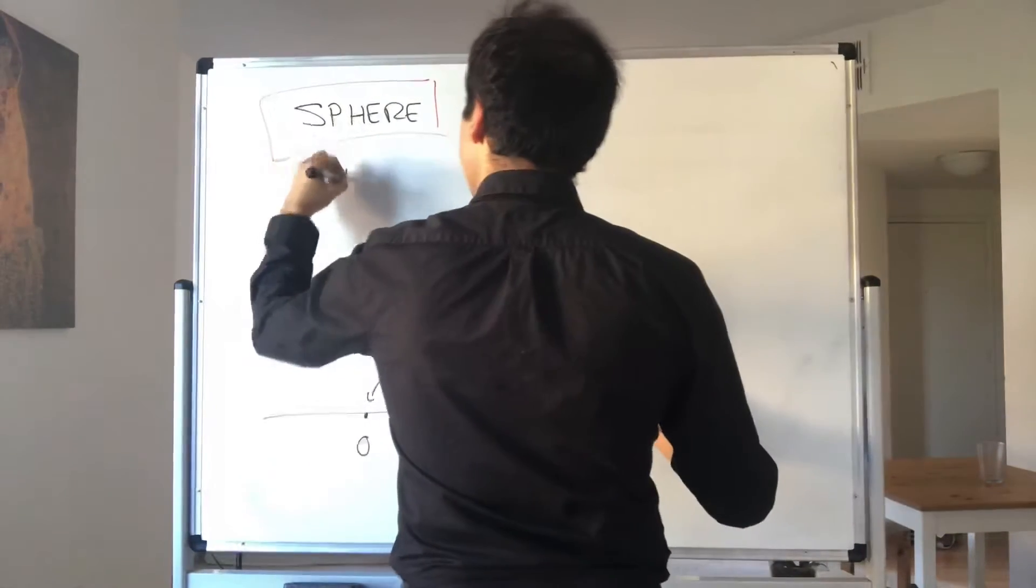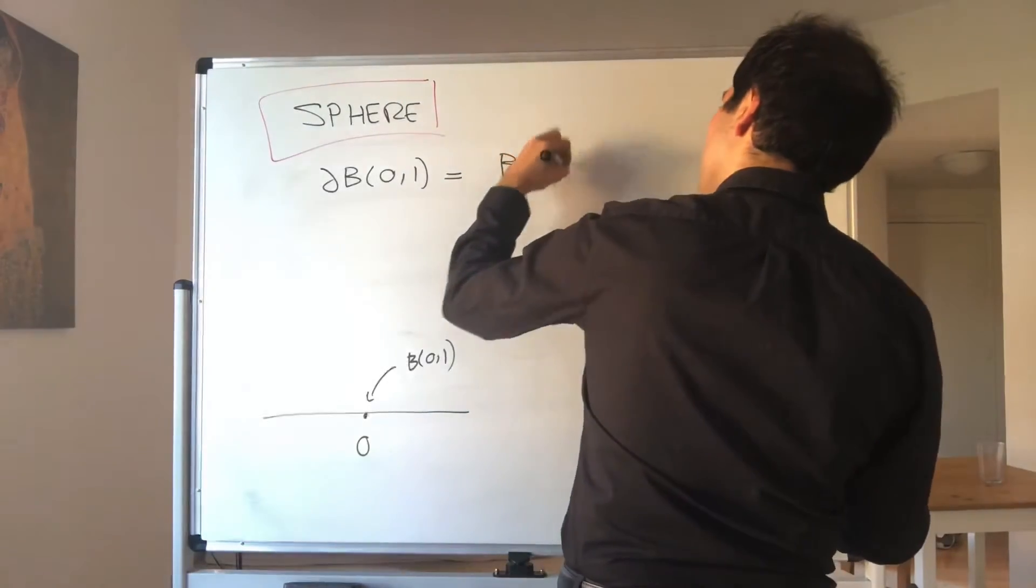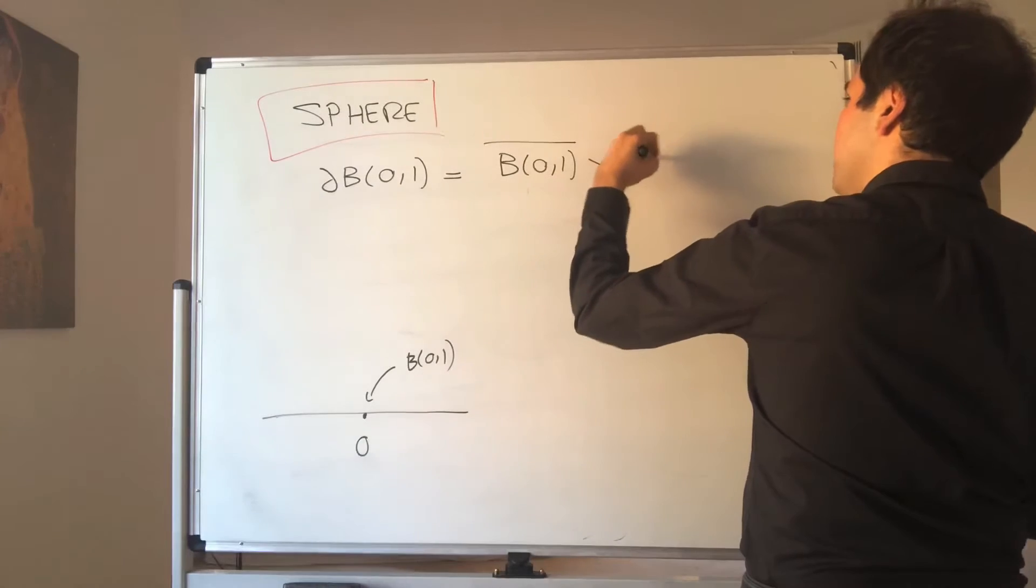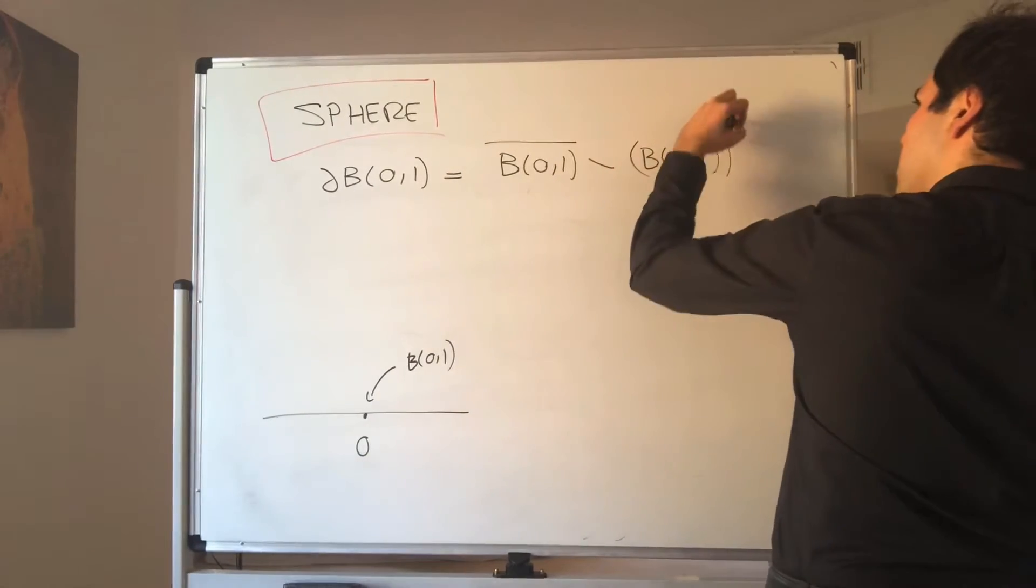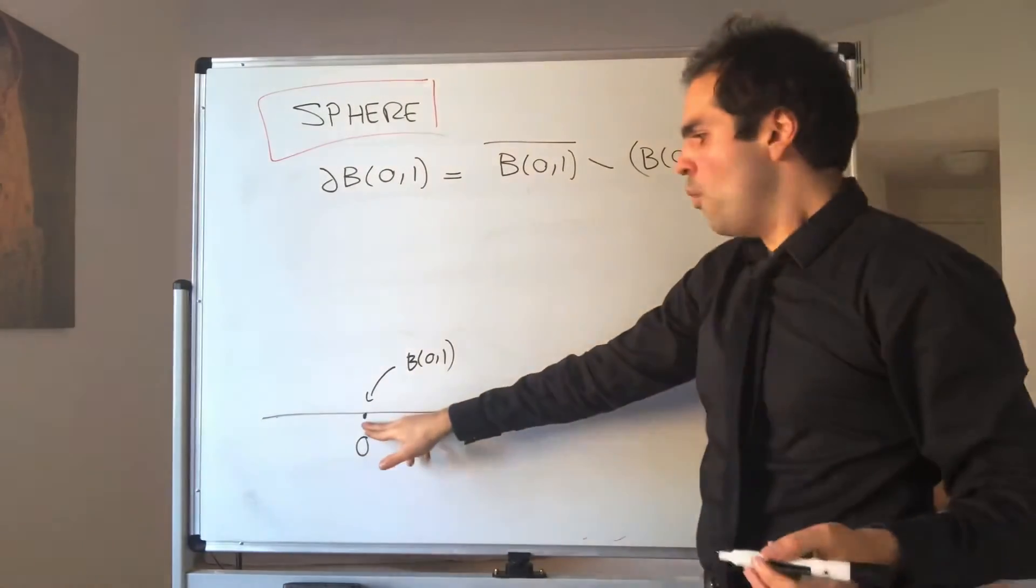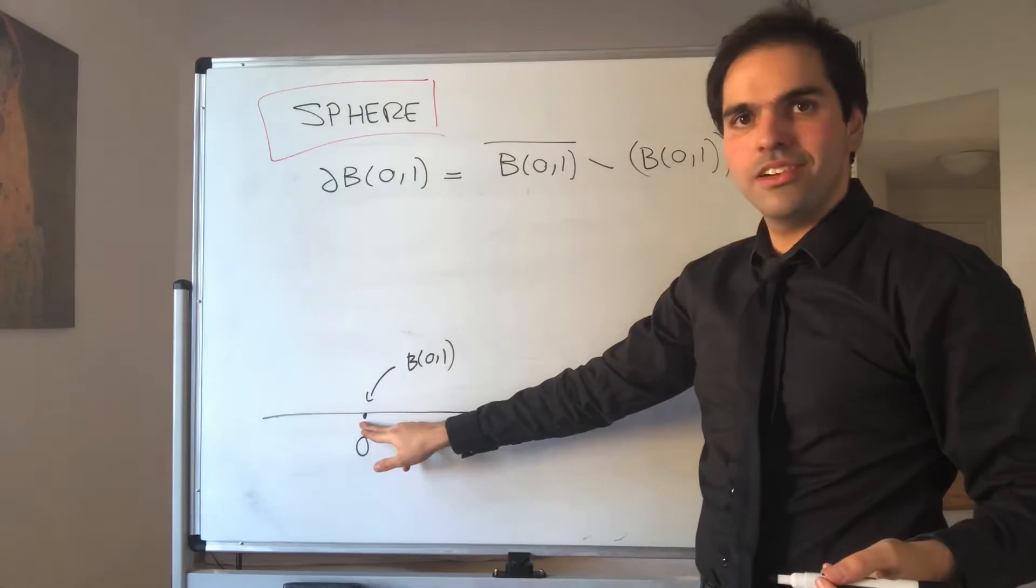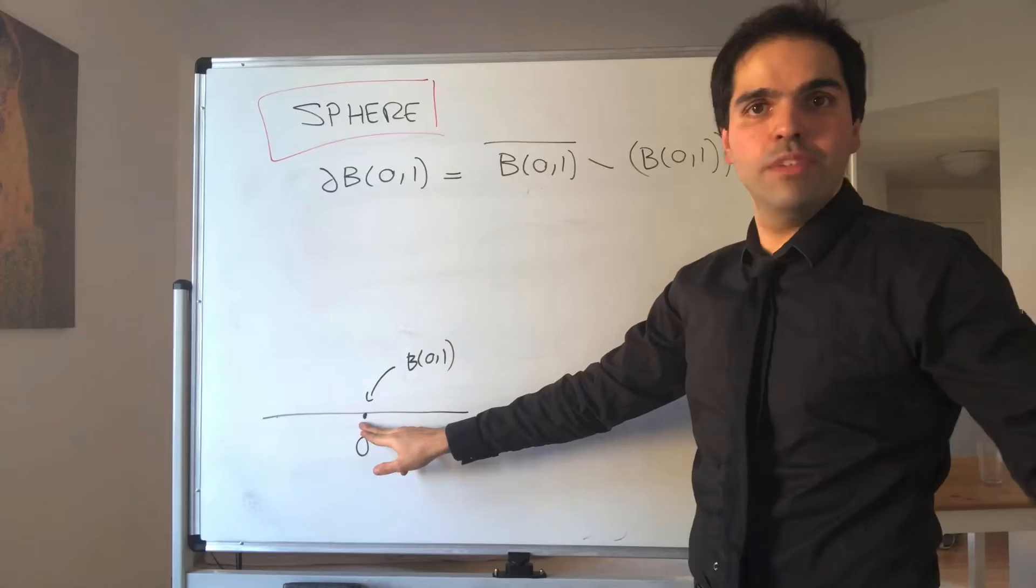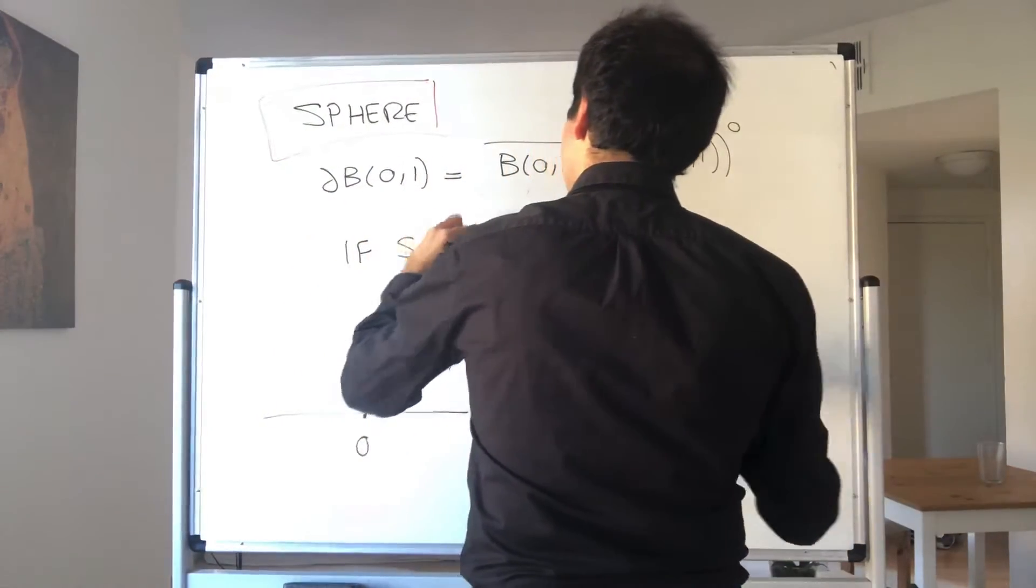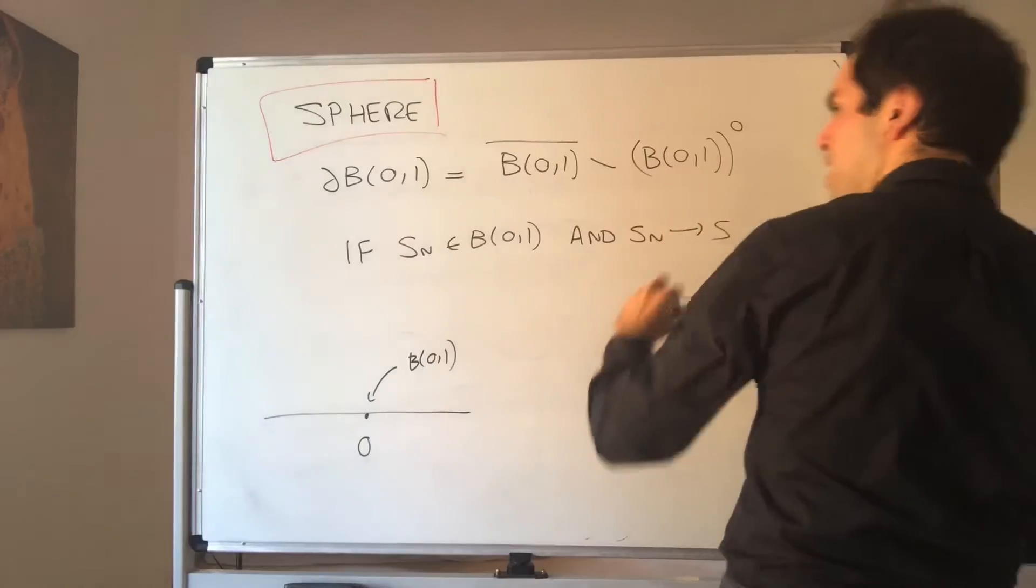That's on the one hand. And let's first of all calculate the boundary of this. So what is the boundary? It's by definition the difference between the closure and the interior. Now, first of all, what is the closure? Well, if you're a sequence in this set, then the only way you can be in that set is if you're zero.